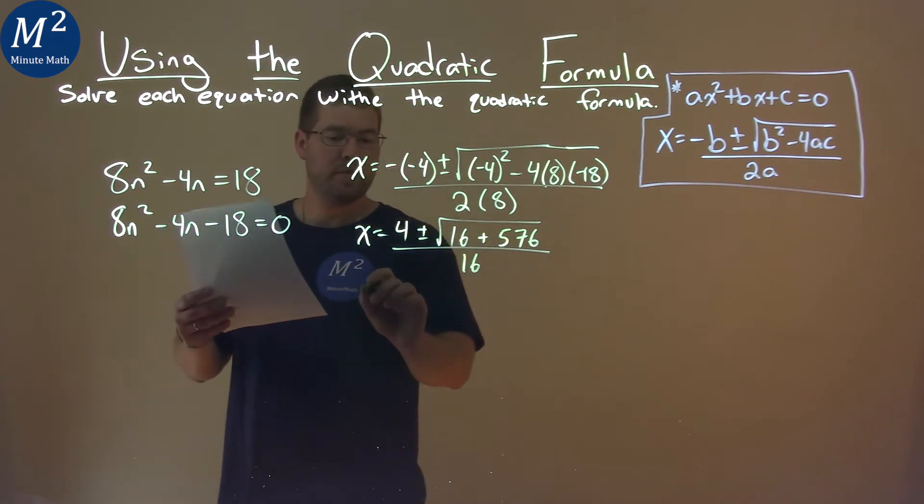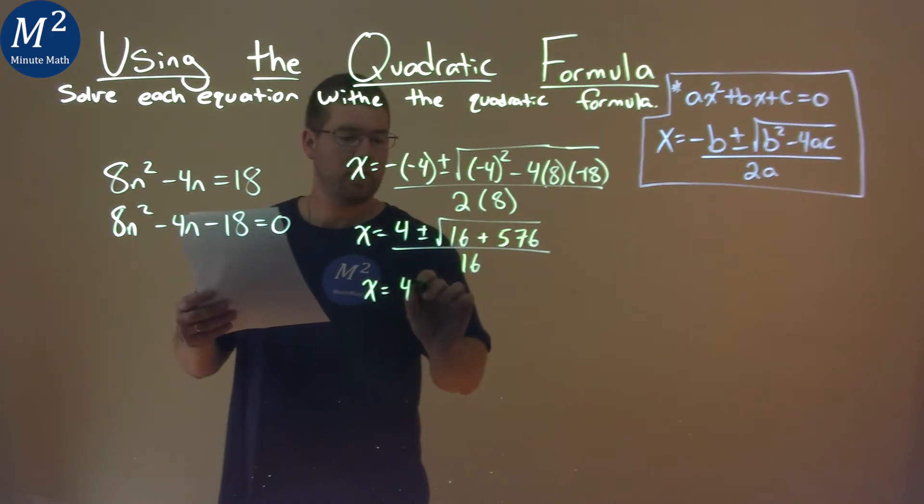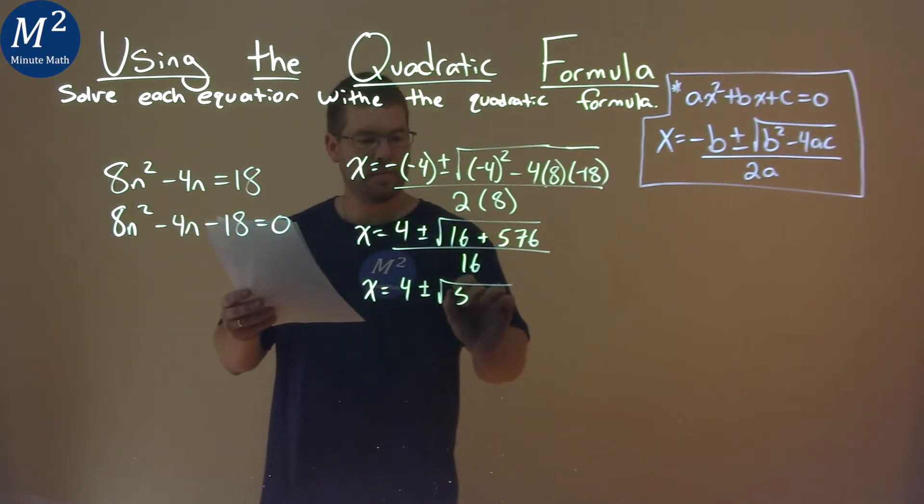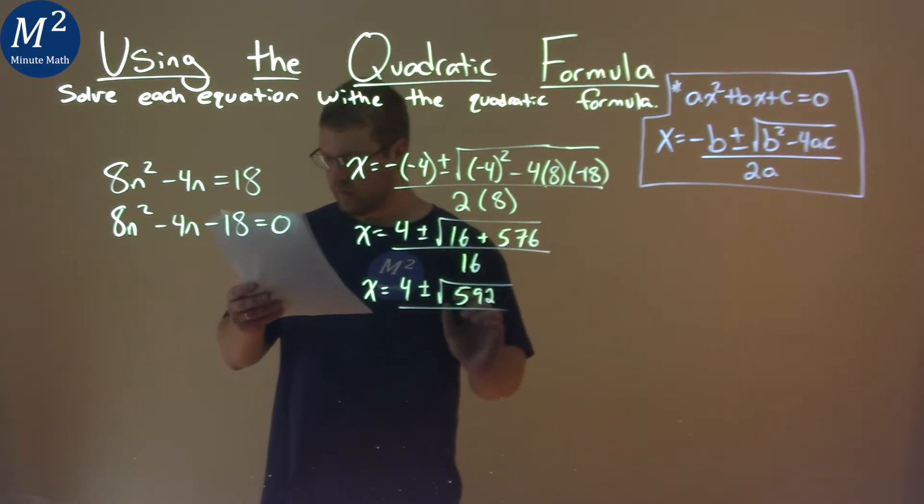From there, we want to keep breaking this down. 4 plus or minus, and 16 plus 576 is 592, all over 16.